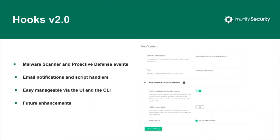Next big thing is Hooks. For those who've never used them before: they are notification and custom handlers that allow receiving asynchronous notifications on malware detection — such as scanner start, stop, malware detection and other events. For example, you can create a shell script and specify it as a handler for the malware detected hook. This script will be launched when the scanner finishes and malware is detected, so you could do further actions such as user notification, account suspend, or ticket submission.